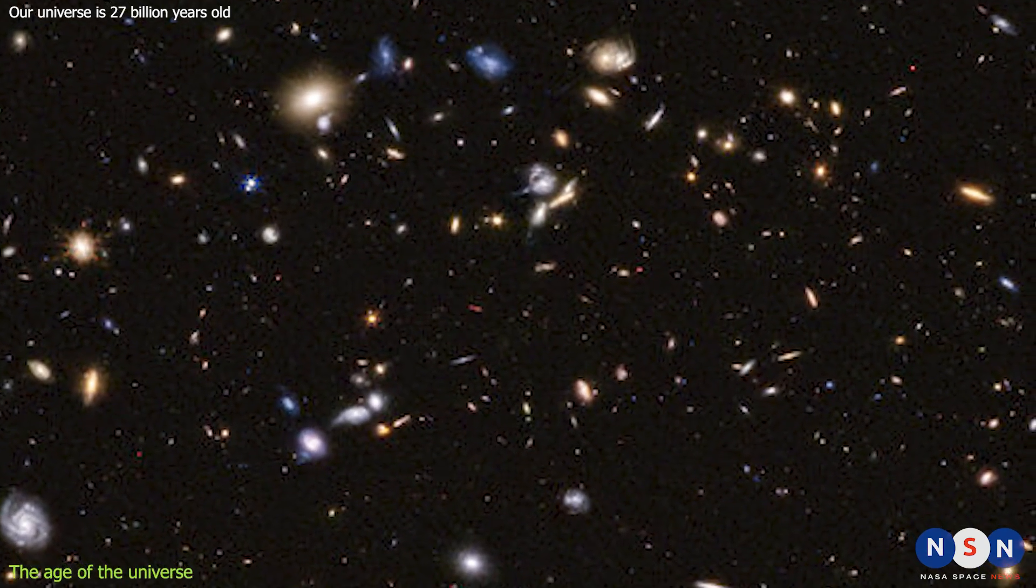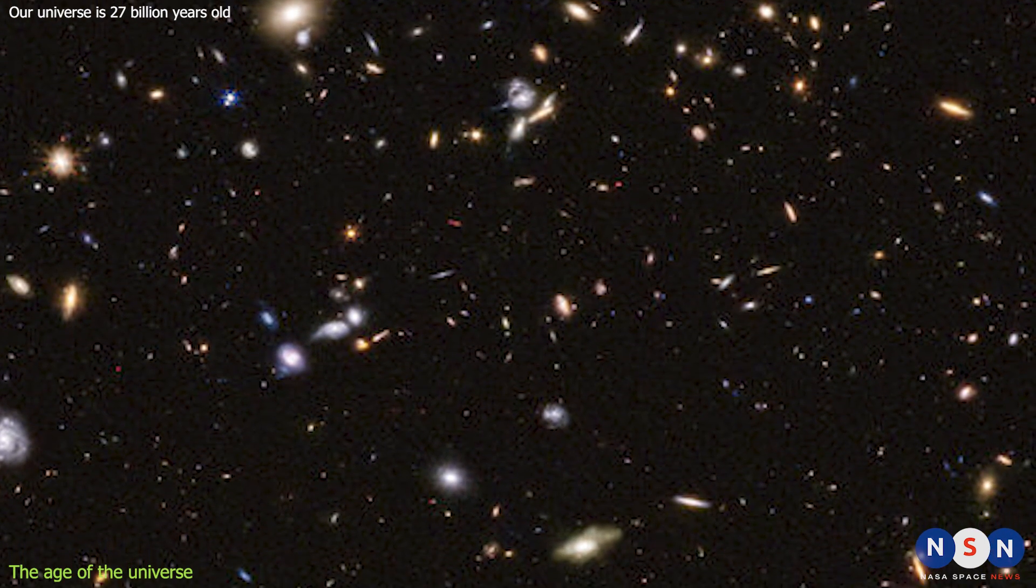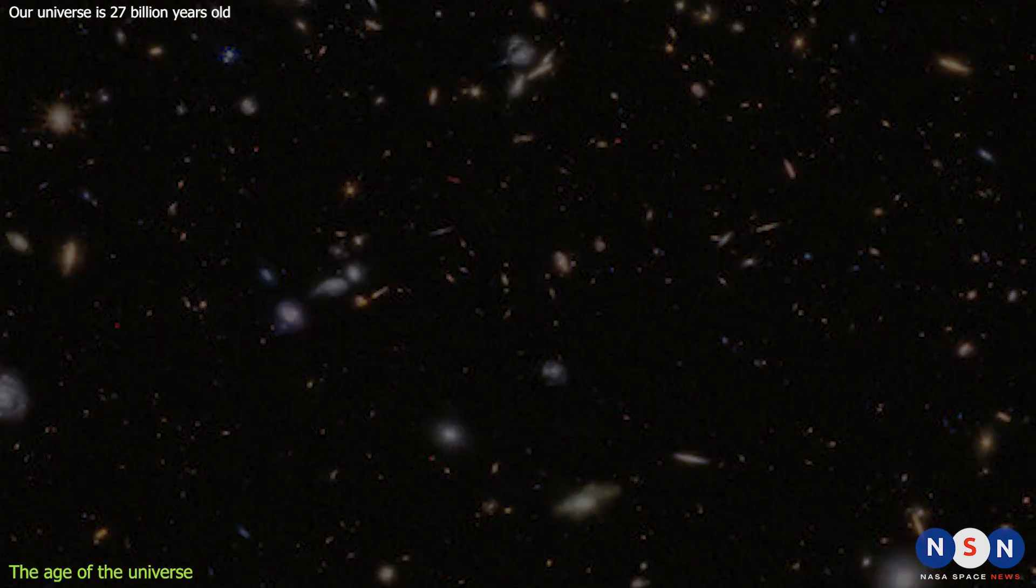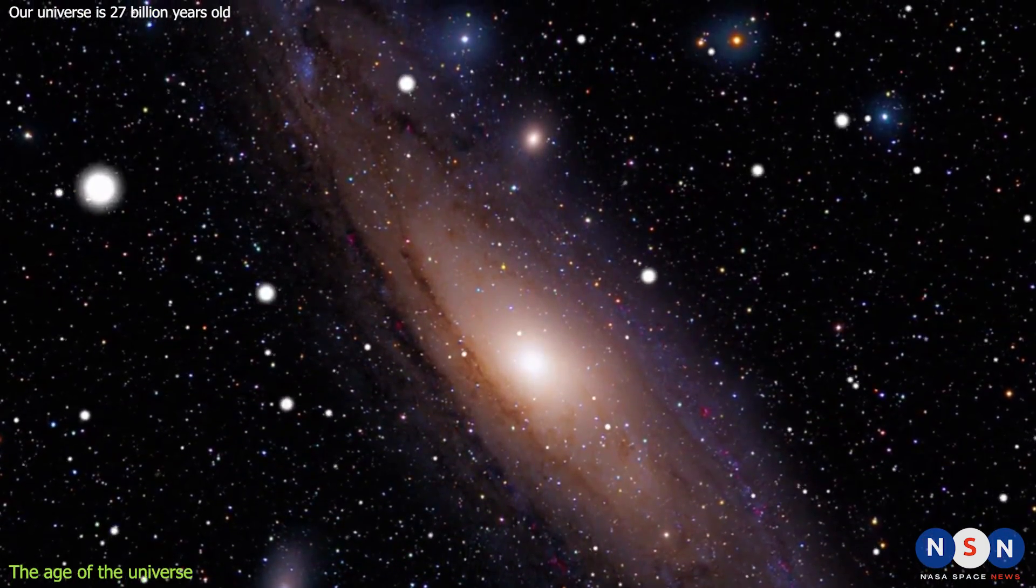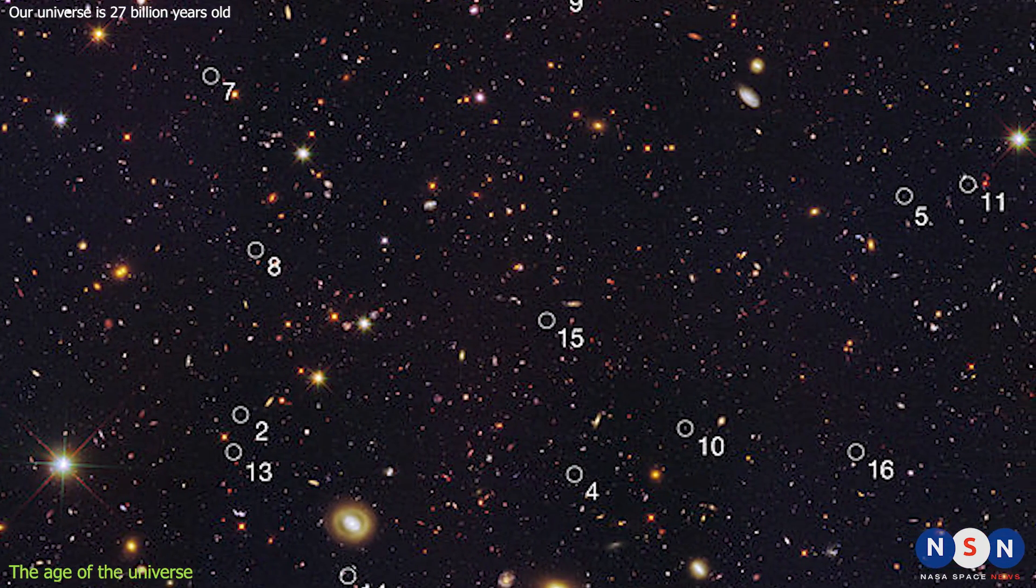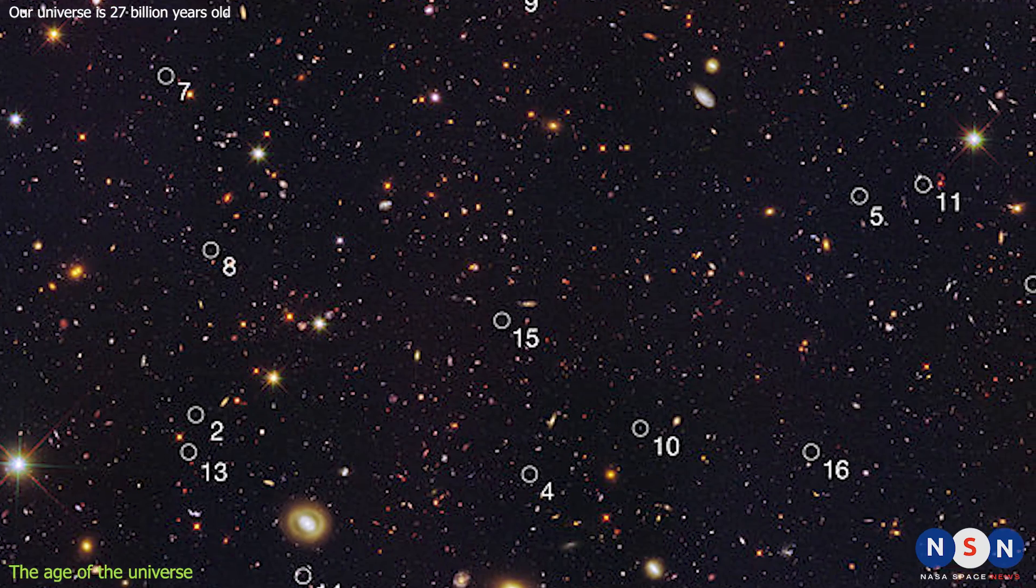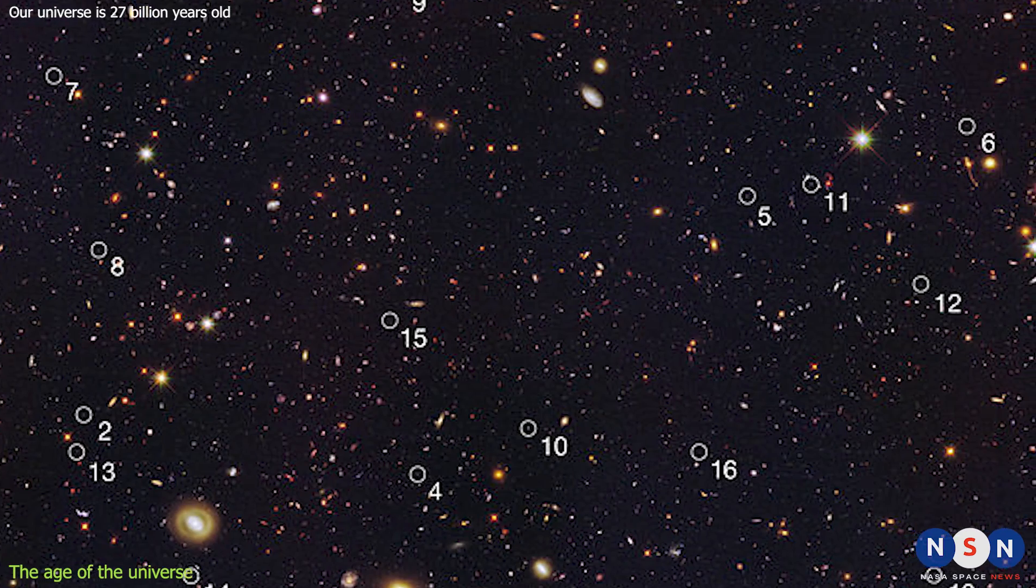which is less than 3% of the current age of the universe. These galaxies are not only very old, but also very small and compact, with diameters of only a few thousand light years, compared to the Milky Way's diameter of about 100,000 light years. They are so unusual and unexpected that they have been dubbed the impossible early galaxies, because they seem to contradict our current theories about how galaxies form and evolve.